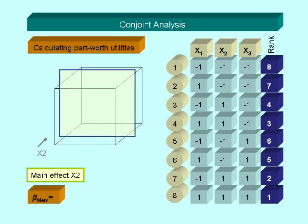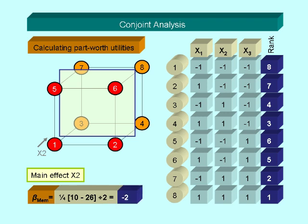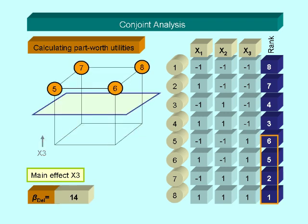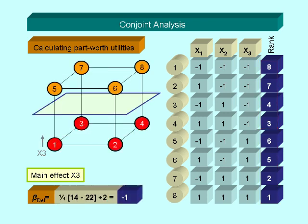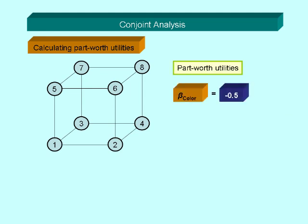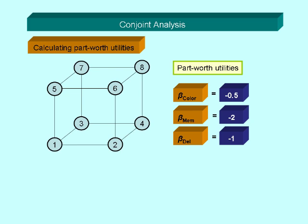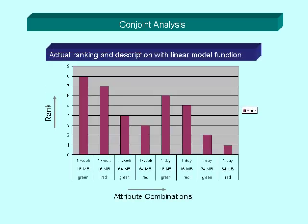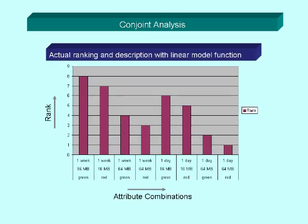In the same way, we proceed for the other two dimensions. As a result, we get the wanted part-worth utilities for color, memory, and delivery. The ranking calculated with the model function fits exactly the actual ranking.